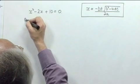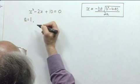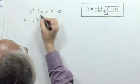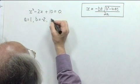Now the value of a is the coefficient of x squared, which in this case is 1. The value of b is the coefficient of x, which is minus 2. And the value of c is the constant term, which is 10.